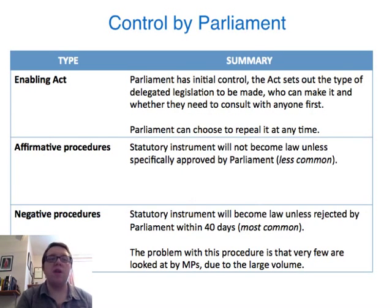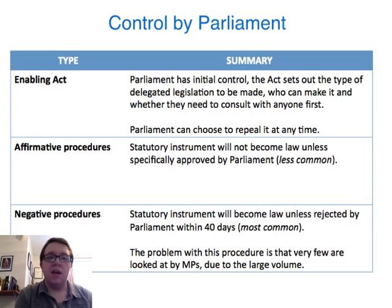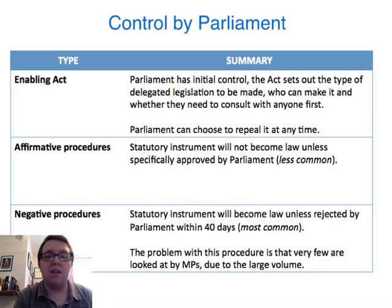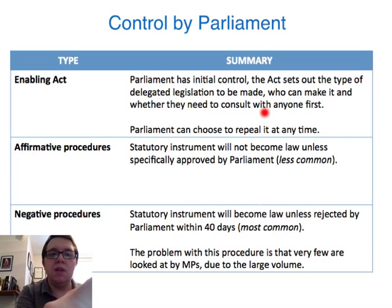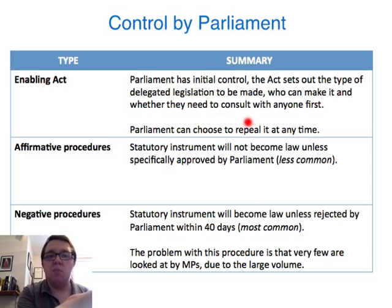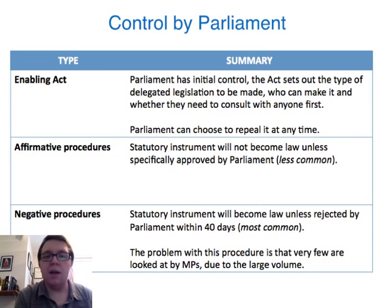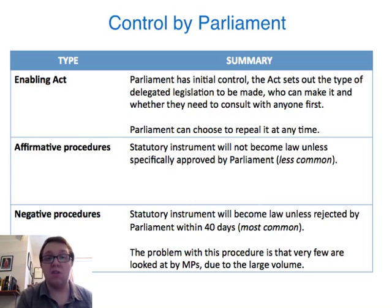As you can see, there are three controls by parliament in more detail. The Enabling Act is the act of parliament that sets out the type of delegated legislation and who can make it, and indeed who needs to be consulted before a government minister can make it. Because parliament is the supreme legislative body in the UK, it can repeal — that is, get rid of or abolish — that act at any time and stop the government minister from being able to create that particular piece of legislation if they feel it is needed.